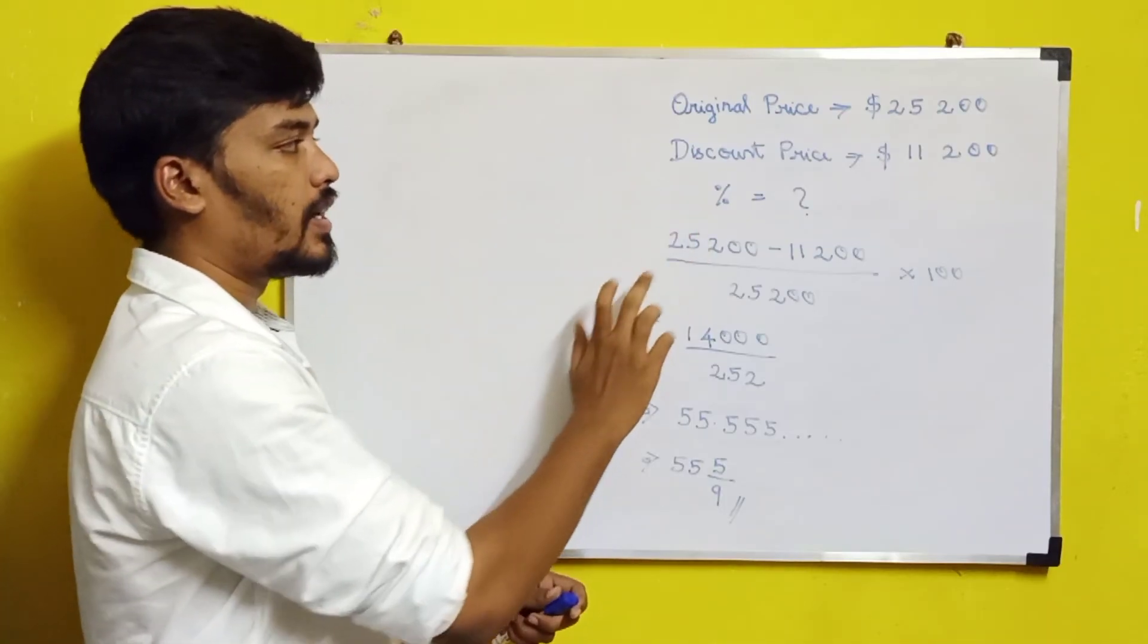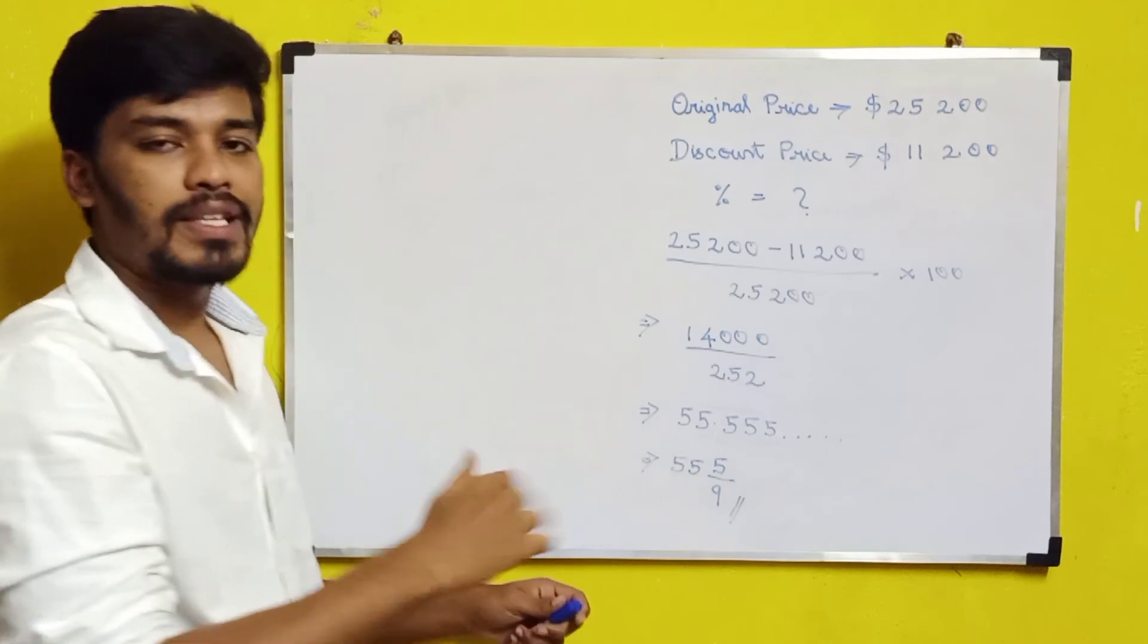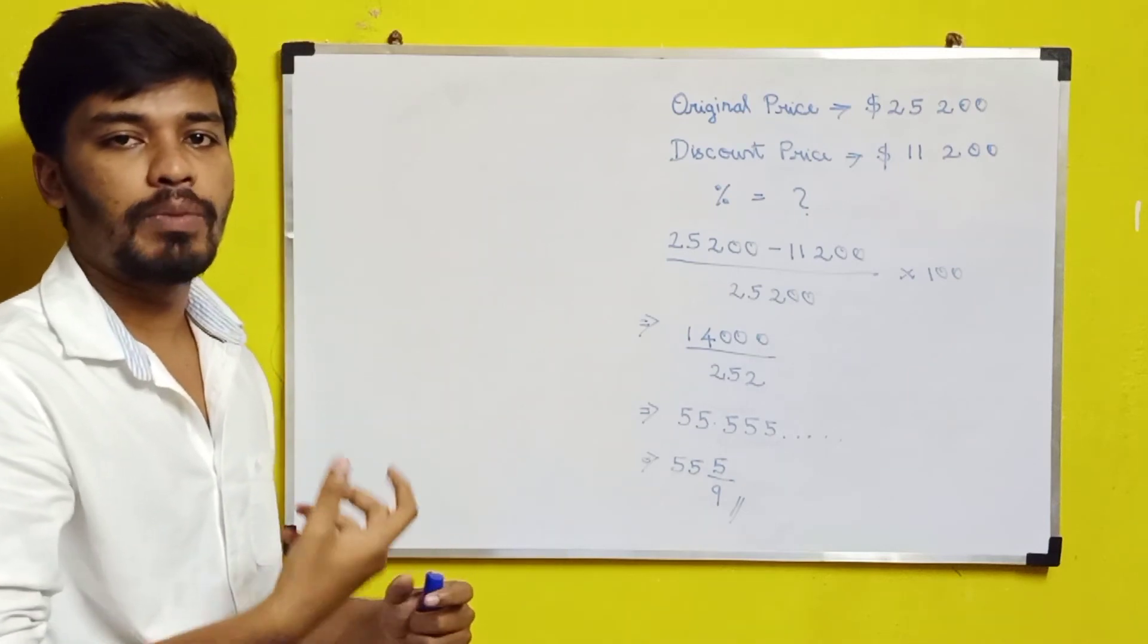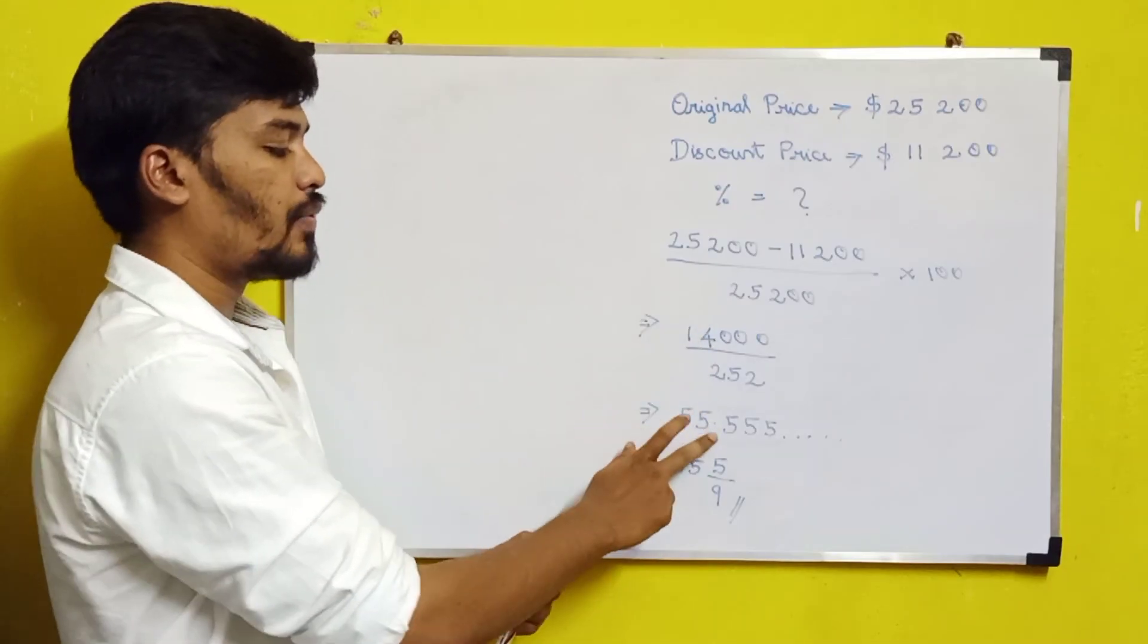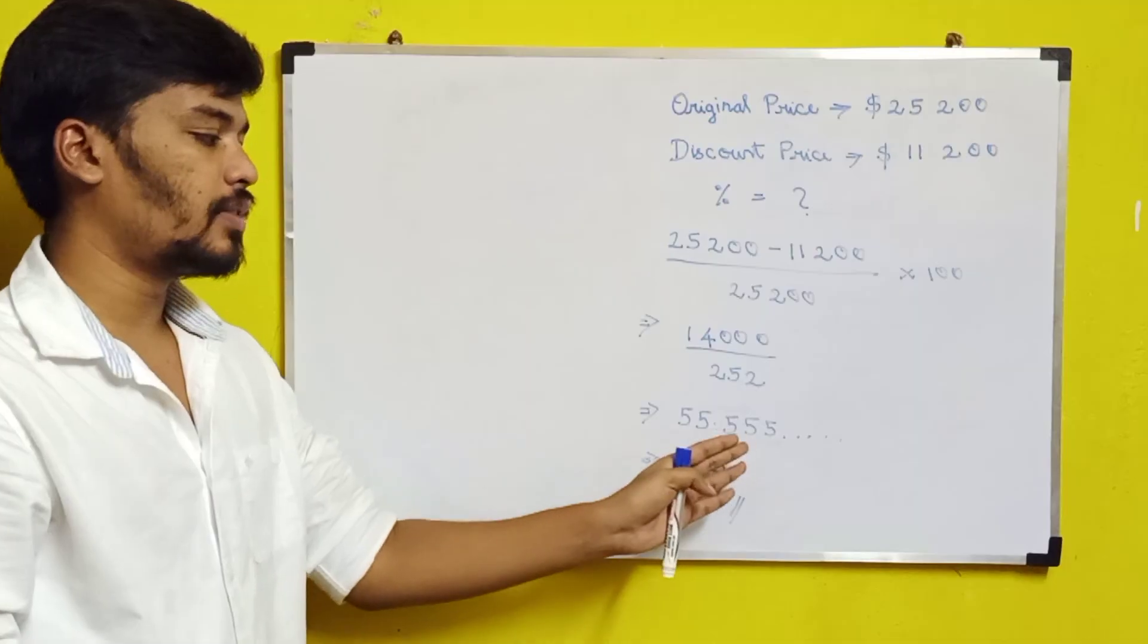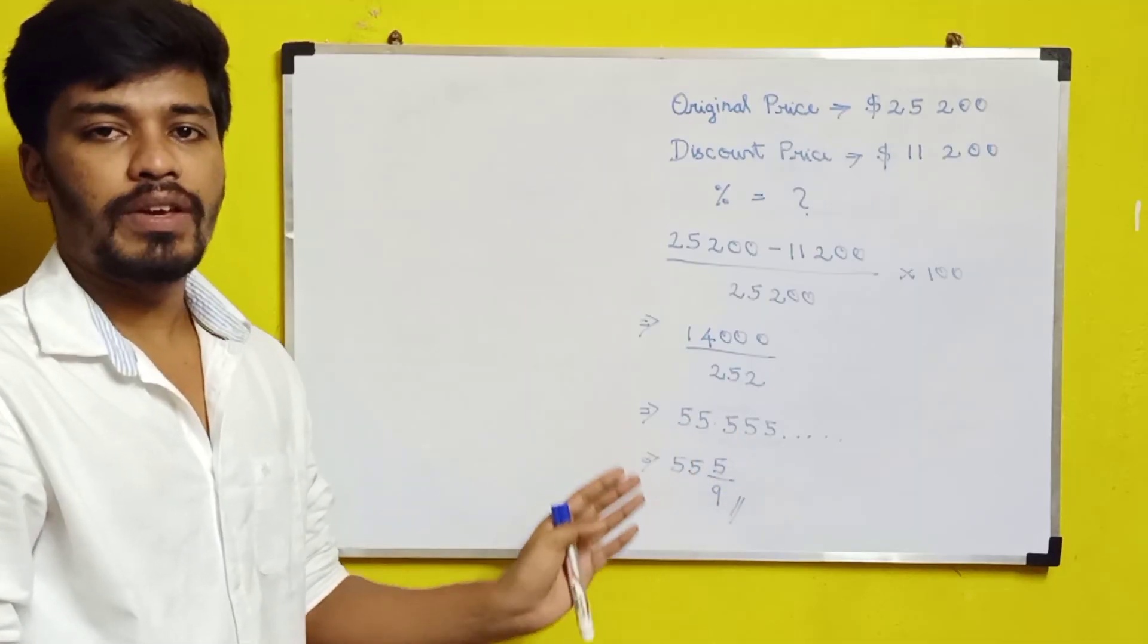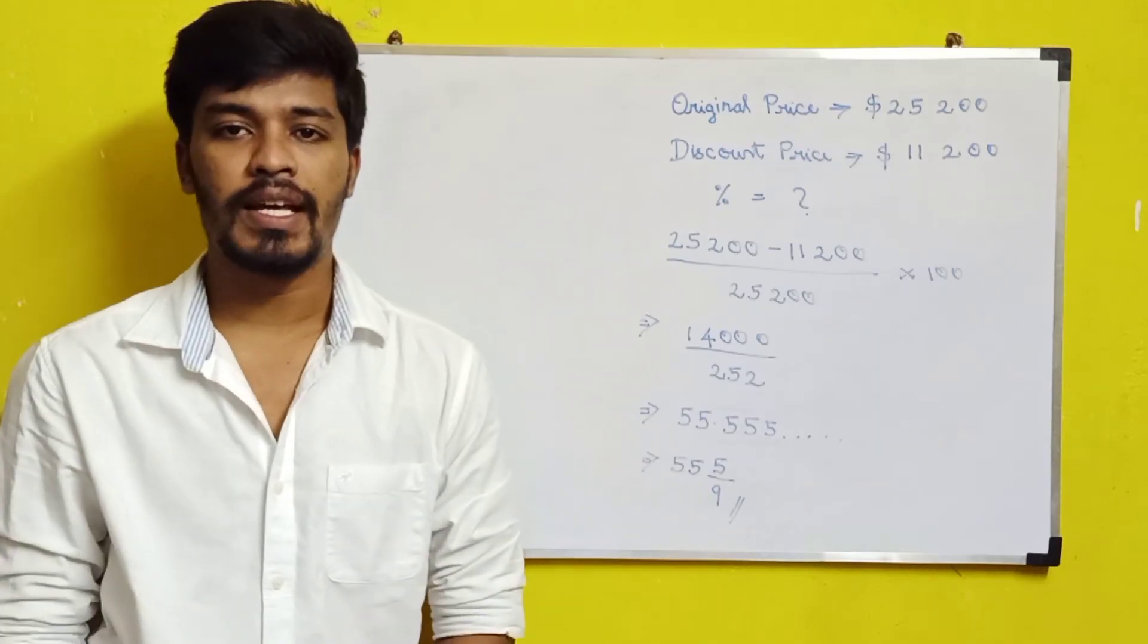How do we calculate the discount percentage? Original price minus discount price, divided by original price, times 100. This will give us the discount percentage. Solving these values, you get the answer as 55.555. They have given the option as a mixed fraction, so your answer will be 55 and 5/9.